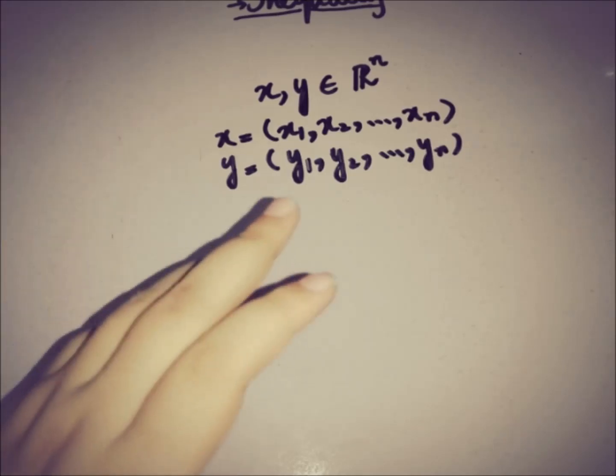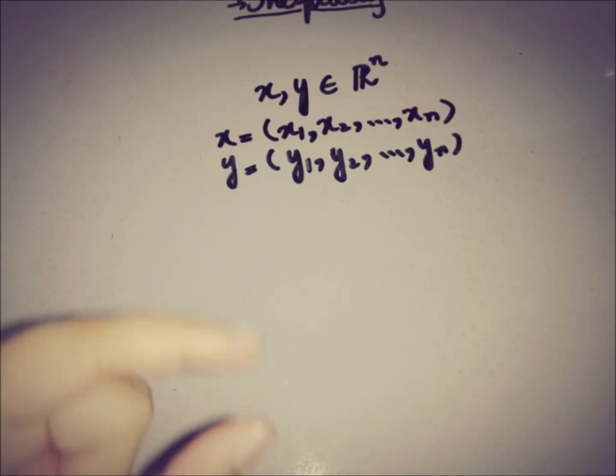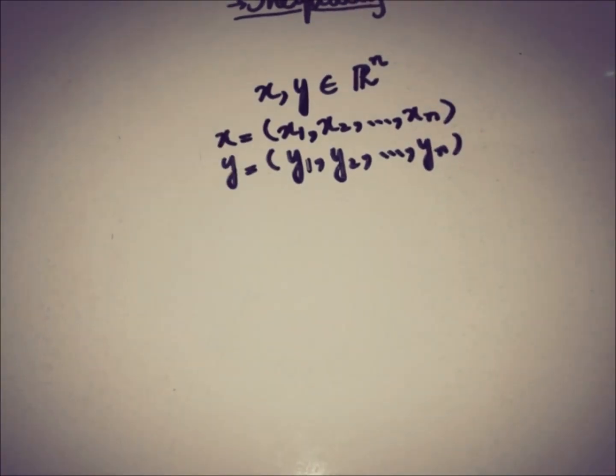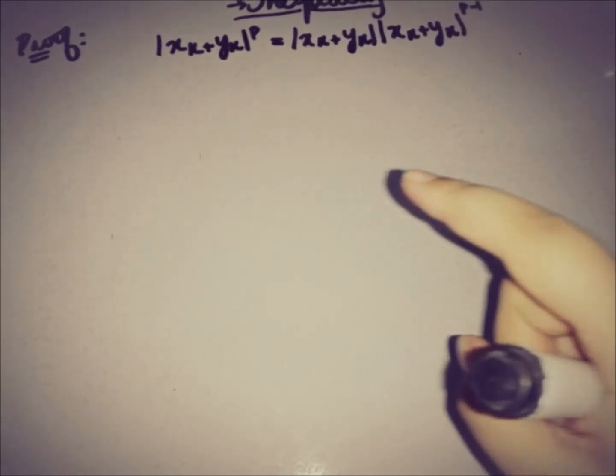Since k in the subscript goes from 1 to n, we can write |xk + yk|^P as the product of |xk + yk| and |xk + yk|^(P−1), by simple algebraic manipulation to fulfill the equality.